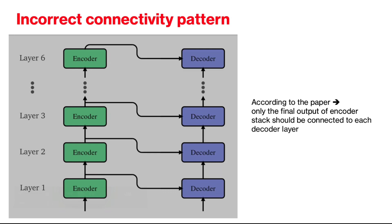Before we start, I'd like to mention that in one of my previous videos on transformer architecture I described the incorrect connections. Thankfully one of the viewers caught that and pointed out that according to the original paper the output of the encoder stack is passed to the decoder layers. So I want to apologize to my viewers and decided to make this video to correct my mistake and clarify the connections.